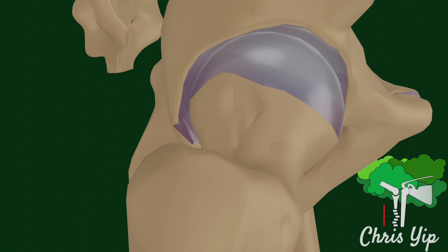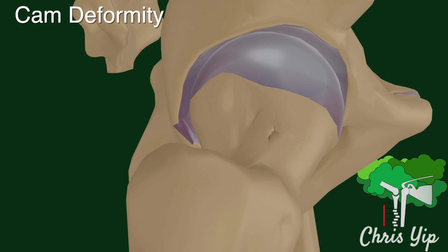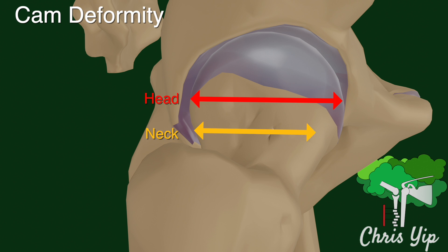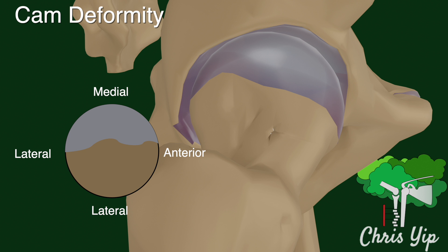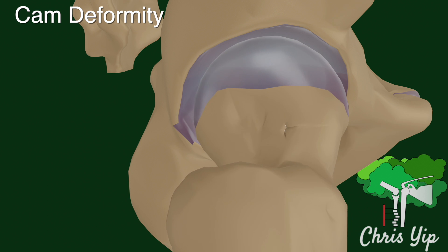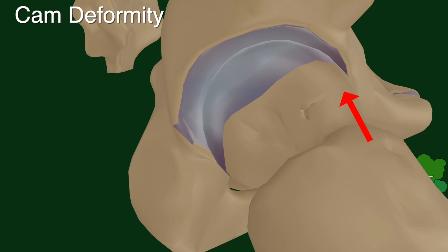Conversely, a cam type deformity is caused by an aspherical femoral head, which leads to a decreased head and neck offset. It is typically located in the anterolateral femoral neck, therefore leading to impingement during hip flexion, adduction, and internal rotation.